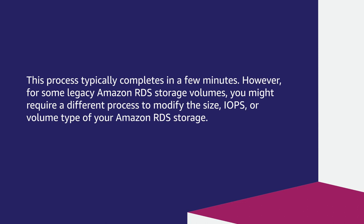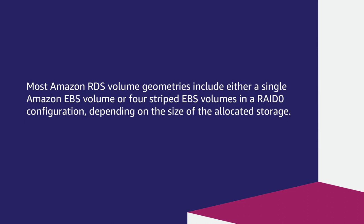However, for some legacy Amazon RDS storage volumes, you might require a different process to modify the size, IOPS, or volume type of your Amazon RDS storage. Most Amazon RDS volume geometrics include either a single Amazon EBS volume or four striped EBS volumes in a RAID-0 configuration, depending on the size of the allocated storage.